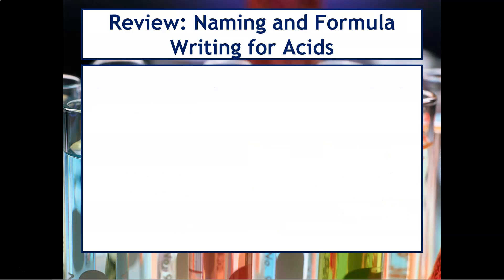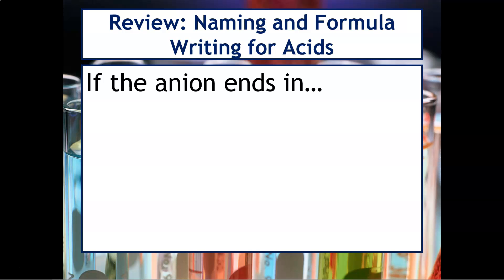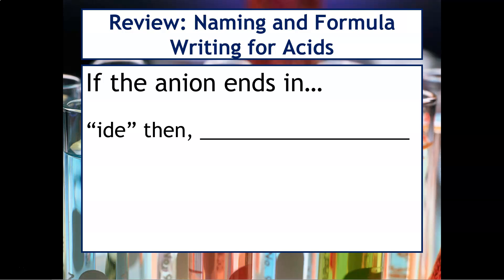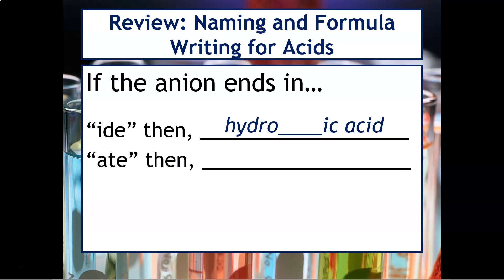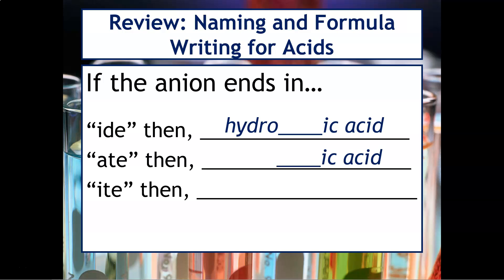Let's do the same thing with acids. Remember, there were three rules we discussed early on. If the anion of the acid ends in "-ide", then it would be hydro-blank-ic acid. If the anion ends in "-ate", then it would be blank-ic acid. And if it ends in "-ite", then it would be blank-ous acid.